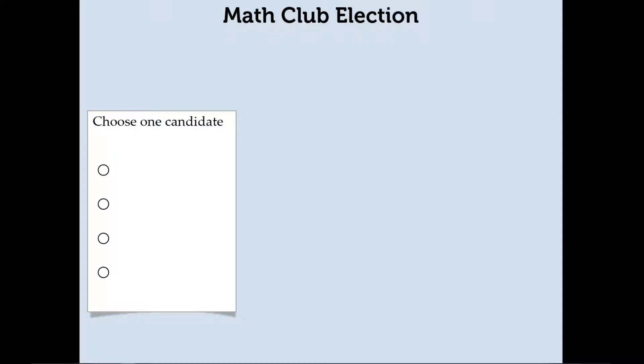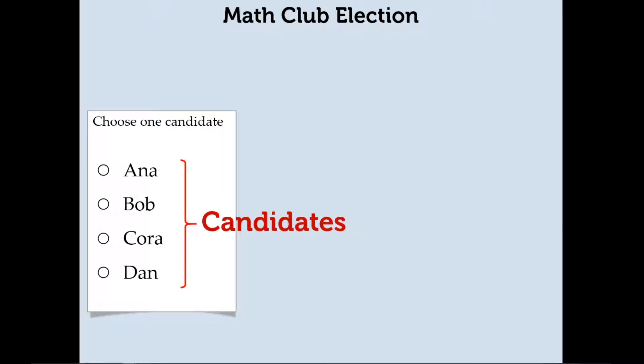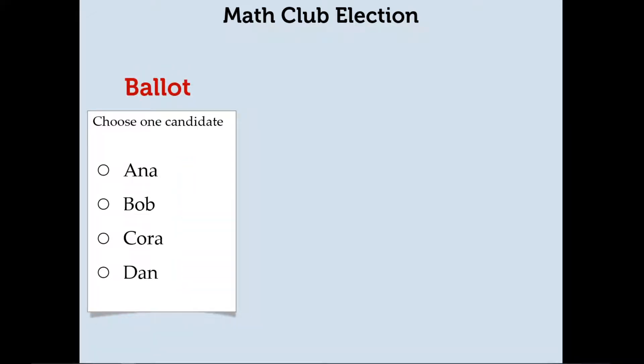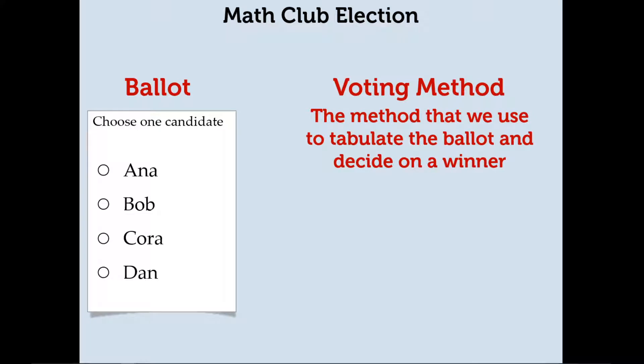Let's say, for example, we have a math club and they're holding an election for the club president. So with any election, we're going to start off with the candidates. So let's just say we have Hannah, Bob, Cora, and Dan, who are running for club president. The means by which voters express their opinion or cast their vote is called a ballot. So once all the voters cast their ballots, the voting method is what we use to tabulate the ballots and decide on a winner.